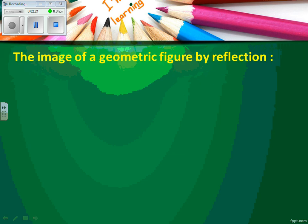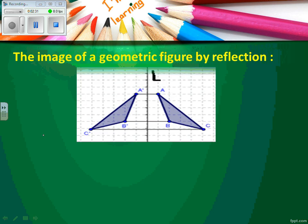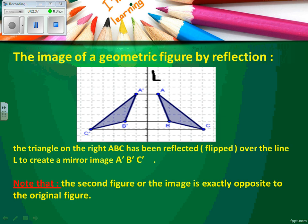The image of a geometric figure by reflection. What is the meaning of the image of a geometric figure by reflection? Look at this figure. If I have a triangle on the right side, A, B, C, which has been reflected or flipped over the line L to create a mirror image, this mirror image will be A dash, B dash, C dash. Note that the second figure, or the image, is exactly opposite to the original figure.